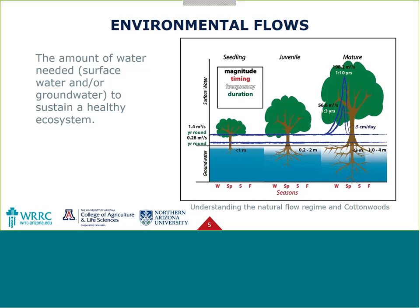Duration refers to how long the flow occurs — for example, year-round base flows. And rate of change: how quickly do you go from a peak to a valley on a hydrograph, or how quickly does the water level recede for groundwater? Studies on cottonwood seedlings indicate two centimeters to less than 4.4 centimeters per day, while for mature cottonwoods it's 100 centimeters per year rate of change. All of these data are from studies within the database.